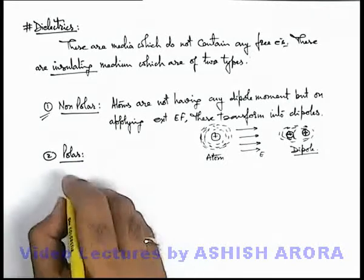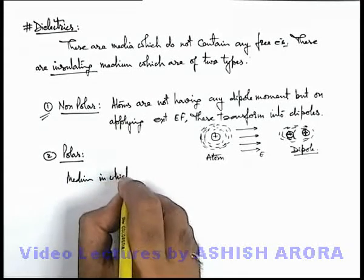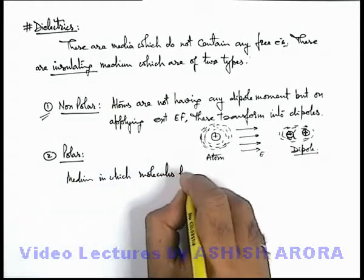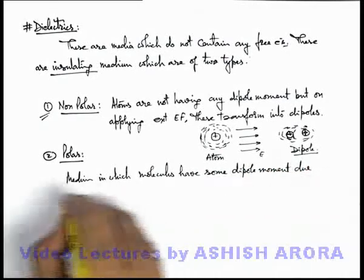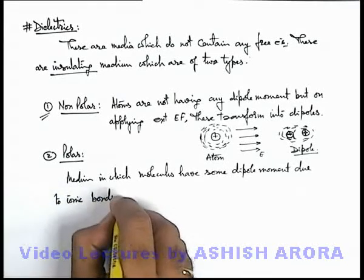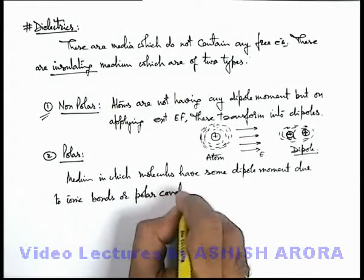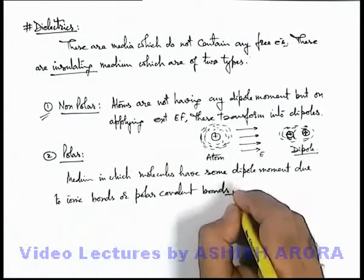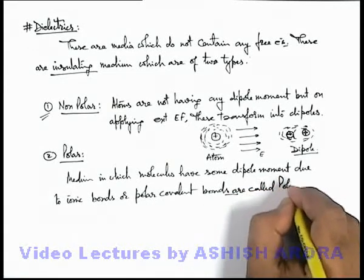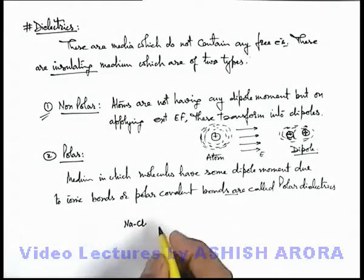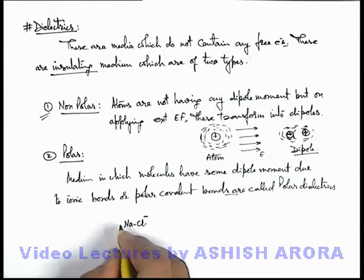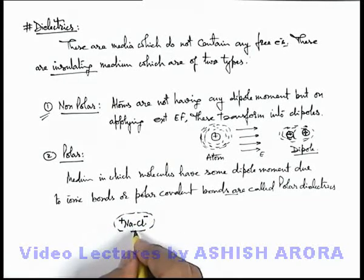If we talk about polar dielectrics, then we can say these are media in which molecules have some dipole moment due to ionic bonds or polar covalent bonds. Like if we talk about a sodium chloride molecule, we know that due to ionic bonding, the chlorine is the negative center of the molecule and sodium is the positive center of the molecule, and itself this is a dipole. But as no free electrons are there in the sodium chloride solid, it can be treated as a dielectric insulator.